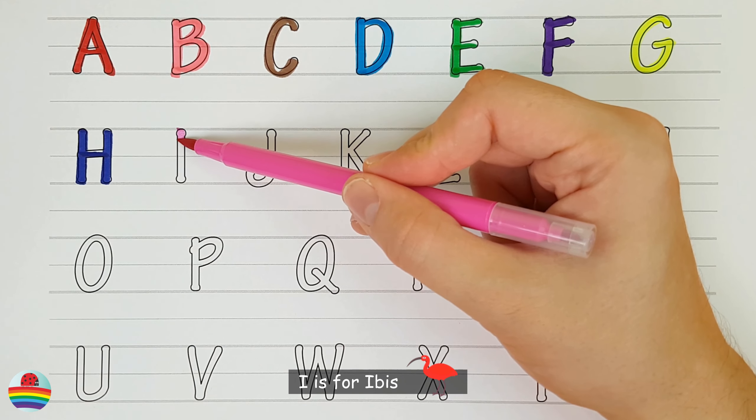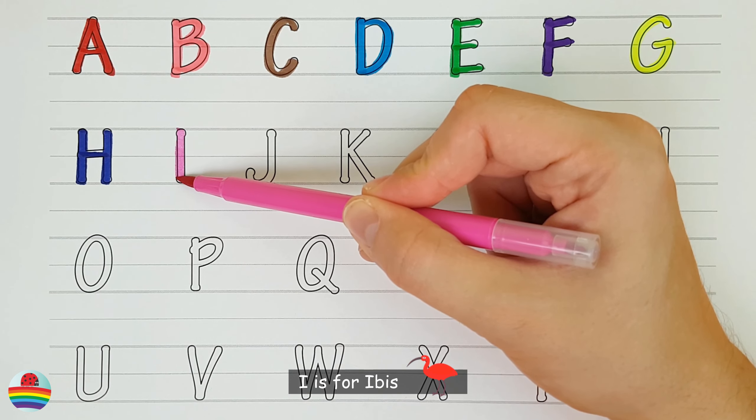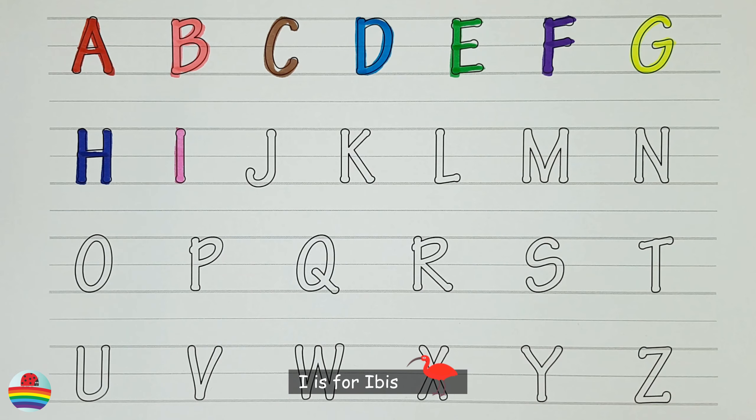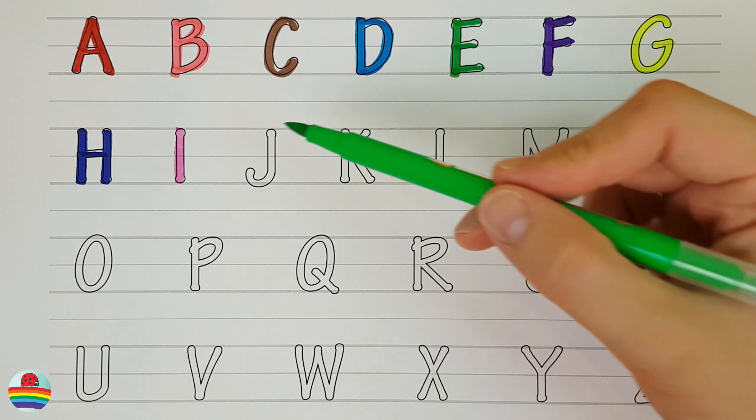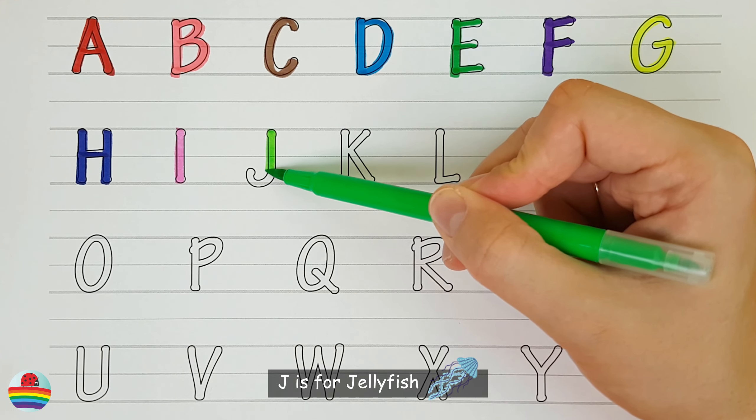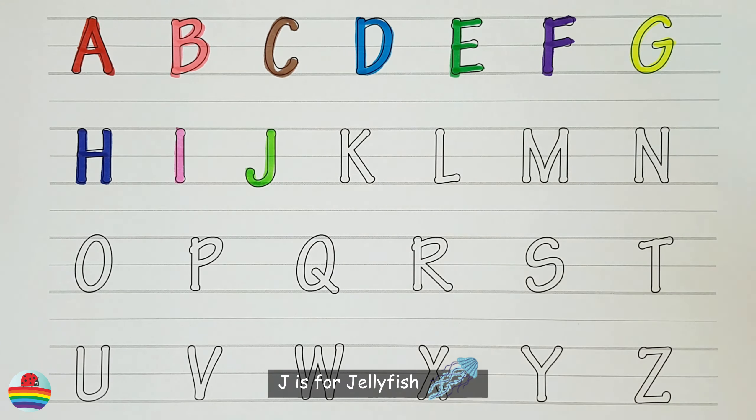I. I is for ibis. J. J is for jellyfish.